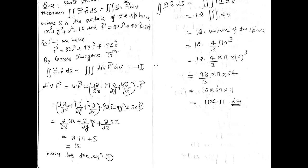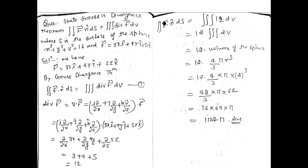Now by the theorem, put all values into the equation. Double integration of f-vector dot n-cap dS equals triple integration of 12 dV. 12 comes outside, and triple integration of dx dy dz means this is the volume — the volume of the sphere. Volume of sphere = (4/3)πr³, and r = 4.